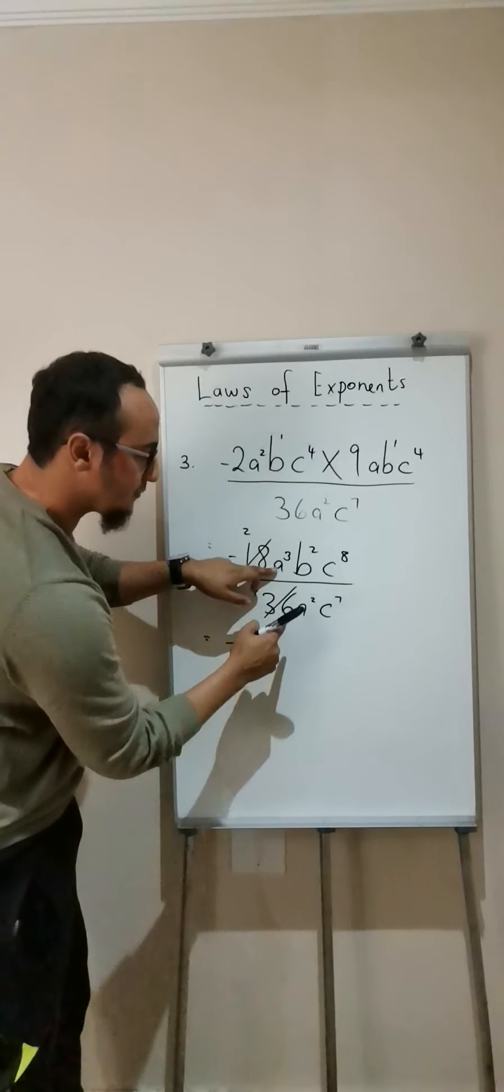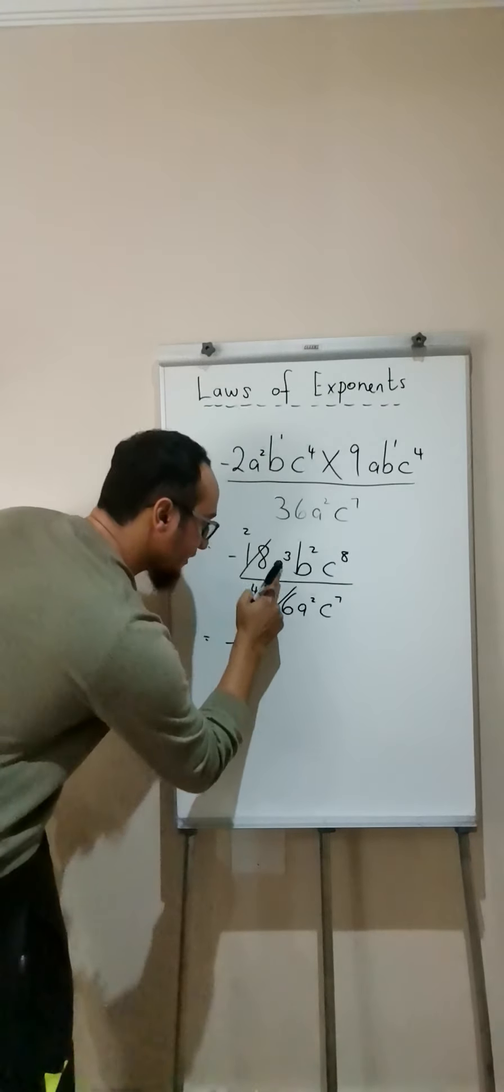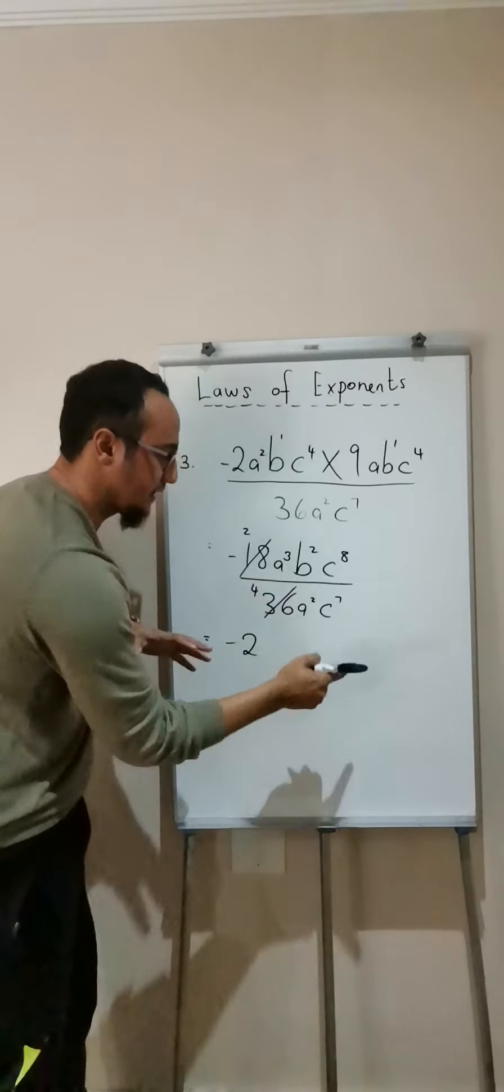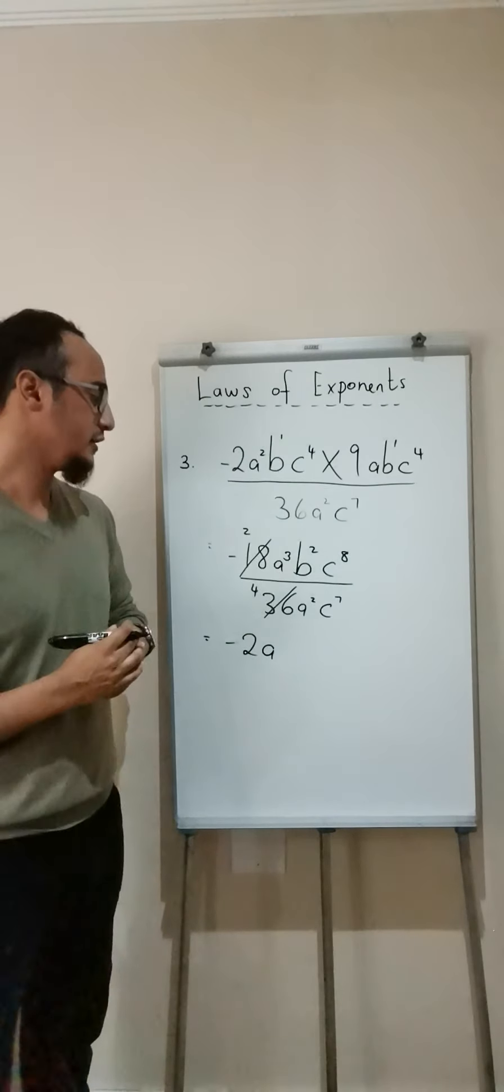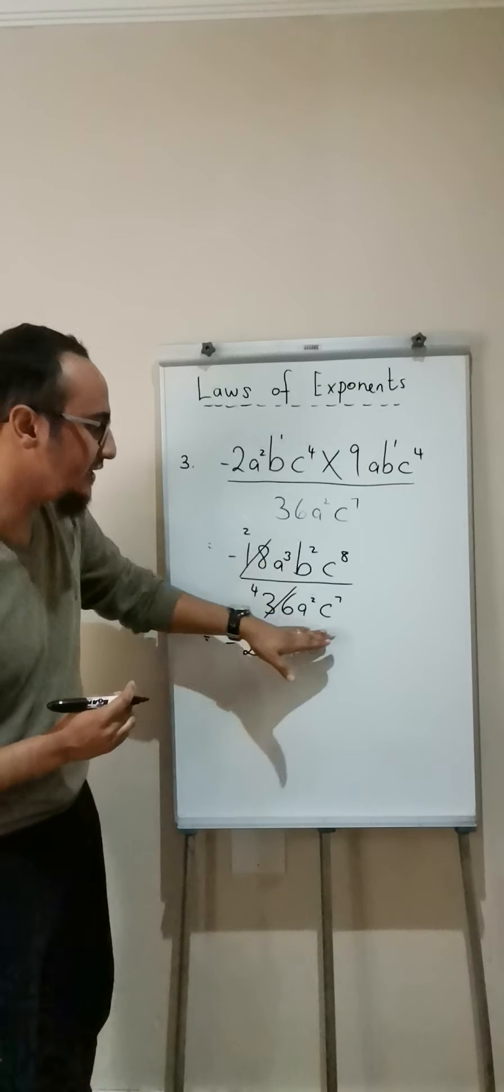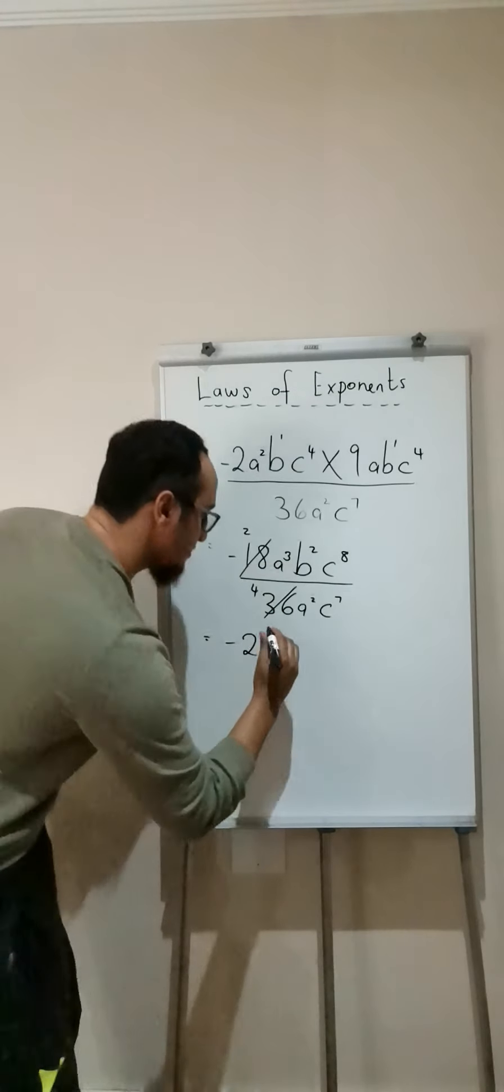A to the power of 3 divided by A squared. What happens to the exponents? They subtract. It will be A to the power of 1. Do I need to write the 1? No, I don't. B squared divided by no B squared stays the same.